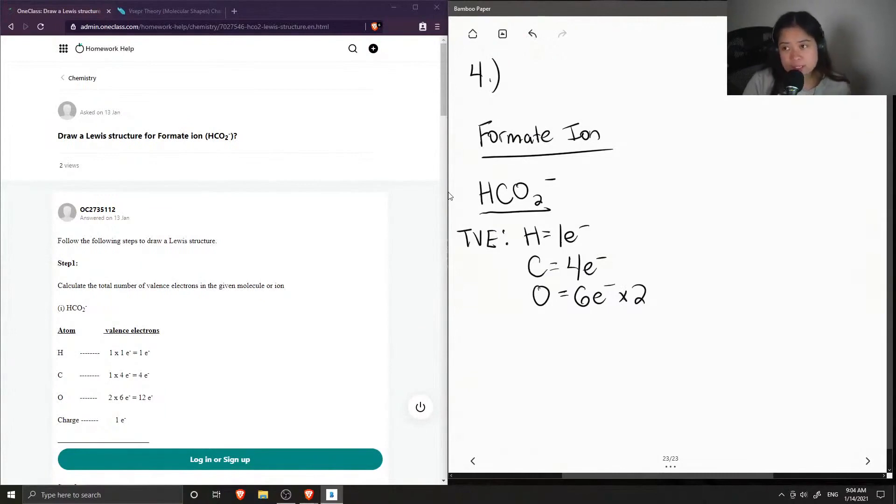And then lastly, since the entire ion carries a negative one charge, I'm going to add an additional electron to our final count. And then if we add these all up, we get a total of 18 valence electrons.